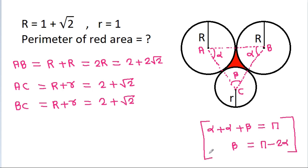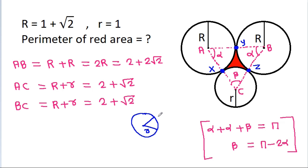And suppose this point is x, this point is y, and this point is g. Then the arc length formula is S equals R times theta, so arc xy will be equal to R times theta.